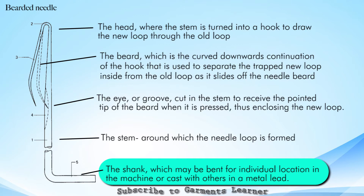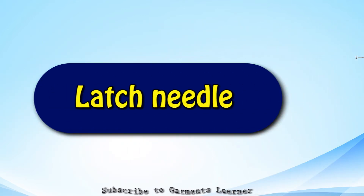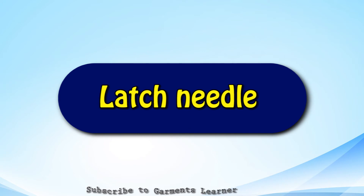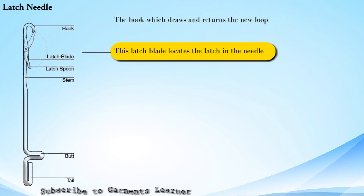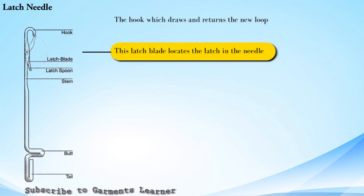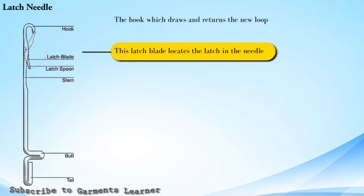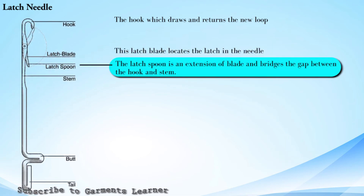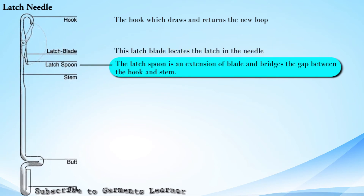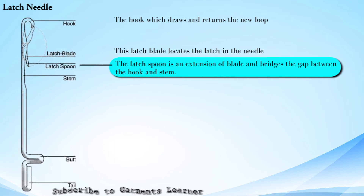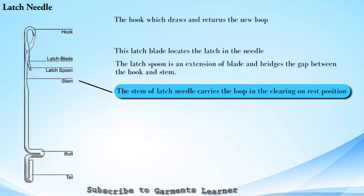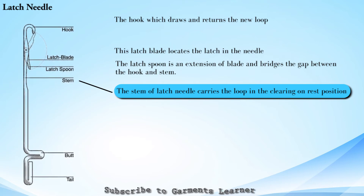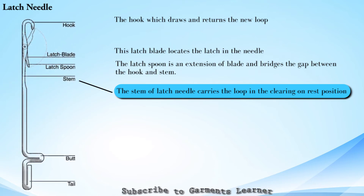Let's see the different parts of the latch needle. The hook, which draws and returns the new loop. The latch plate, which locates the latch in the needle. The latch spoon, which is an extension of the blade and bridges the gap between the hook and the stem.